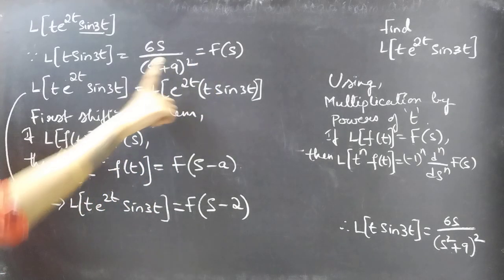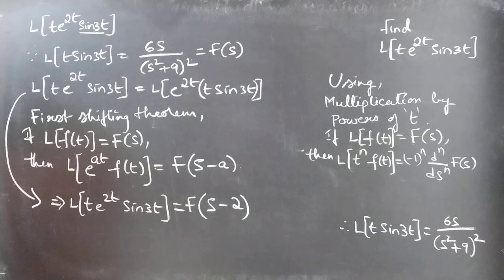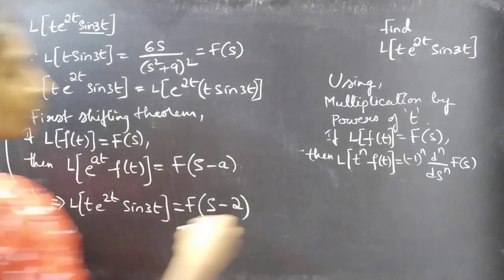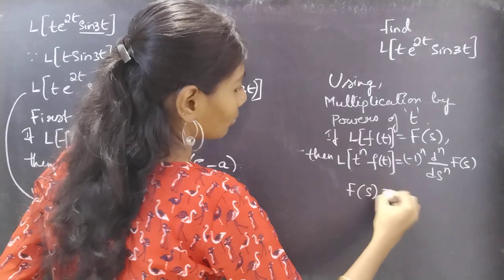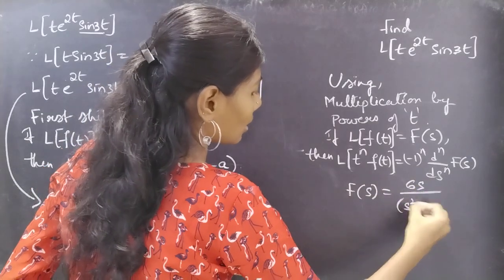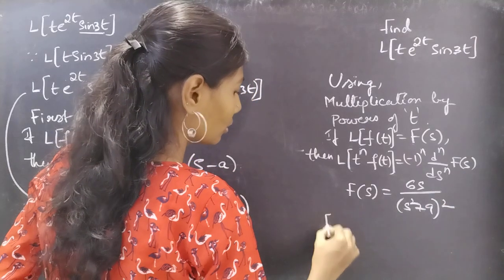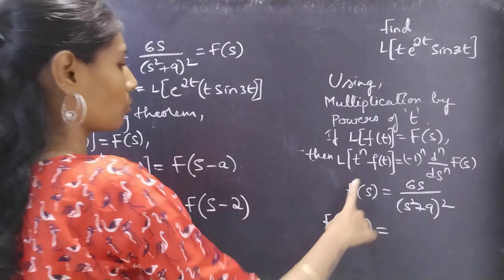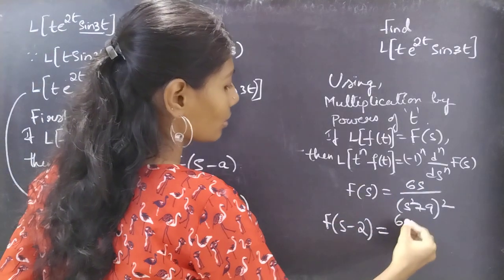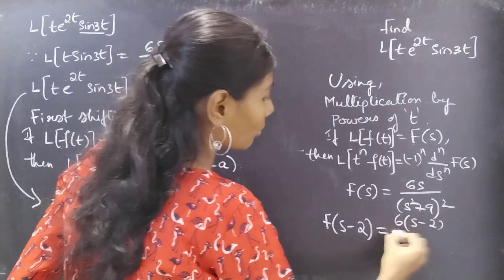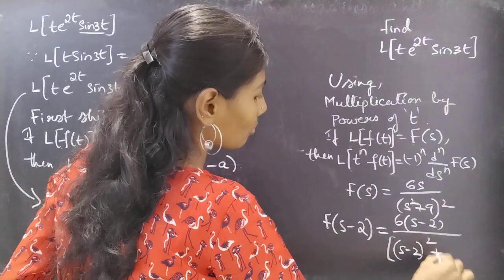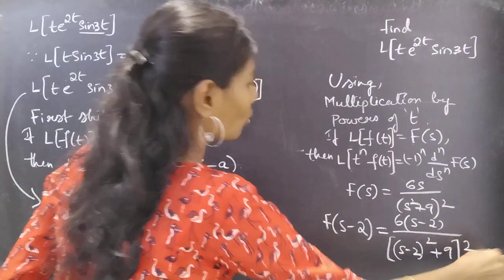If F(s) = 6s/(s² + 9)², then F(s - 2) is found by replacing s with (s - 2). We get F(s - 2) = 6(s - 2) / ((s - 2)² + 9)².